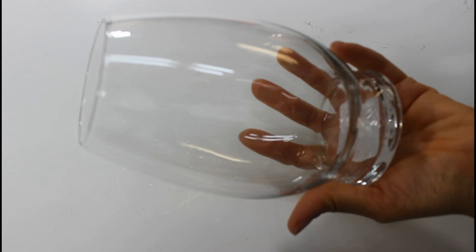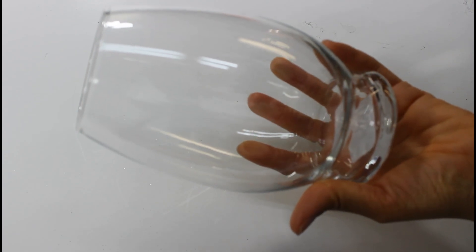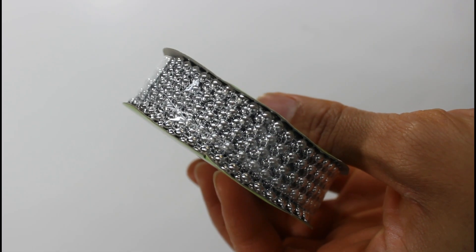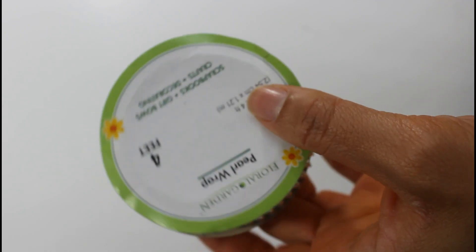For my next DIY, I'll be using this vase and it's from the Dollar Tree. I'll also be using this pearl ribbon and it is from the Dollar Tree as well.